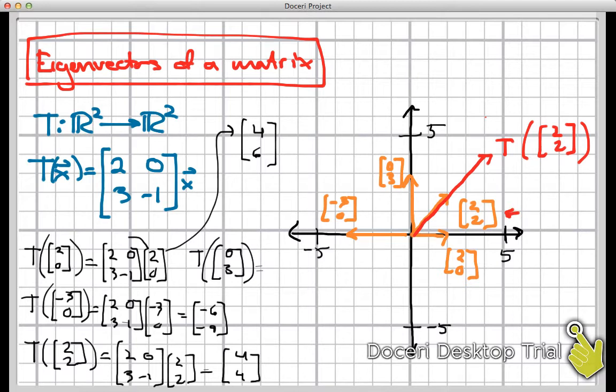So that vector, the output is not the same as the input, but notice that the output is locked onto the same line that the input is locked onto, namely this line, y equals x, it appears. So that vector (2,2) did not get moved in a really significant way by this transformation.